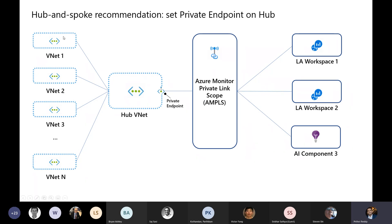If you have a lot of VNets in your environment and you're creating an AMPLS for every VNet, that can become very cumbersome. If you have 20 VNets and want all traffic to be private, creating 20 private endpoints is very inefficient. What Microsoft recommends is a hub and spoke architecture — create a hub VNet where all your shared services reside, and peer it with all your spoke VNets. One caveat: make sure there's no overlapping address space. By doing this, you only need to create one endpoint in the hub that connects to the private link scope and gets you to the workspace, rather than creating an endpoint in each spoke VNet.